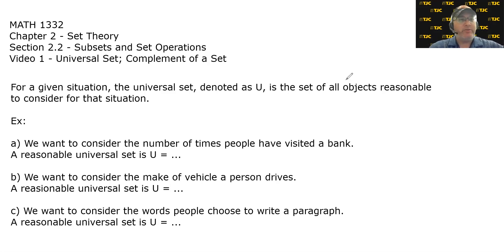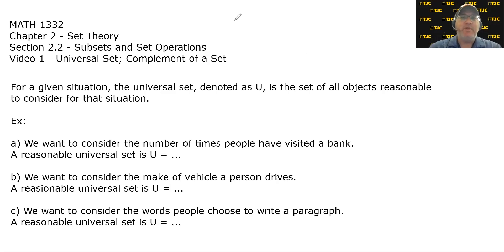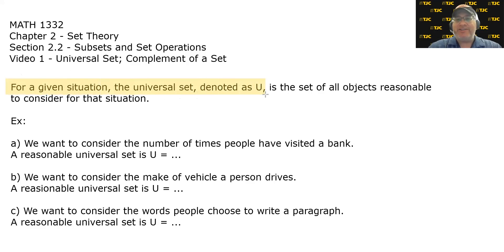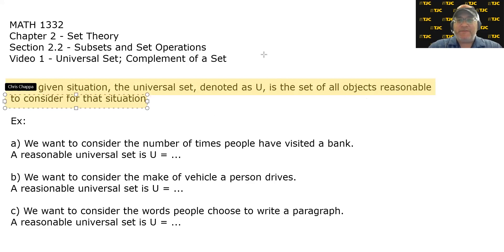In this series of videos, we're going to be talking about set operations and subsets. But before we can talk about both of those, we need to introduce a couple of pretty simple concepts, the first of which is called the universal set. For a given situation, the universal set, denoted as capital U, is the set of all objects reasonable to consider for that situation. Loosely speaking, in a given context, the universal set is everything that would exist within that context.